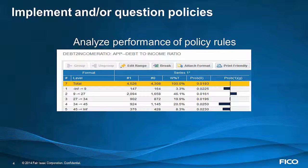We could also see that 20.5% of the population is in that split, so if we were to take an action such as declining them, that would have a sizable impact on our approval rate. All of this information is useful as you question your policy rules.